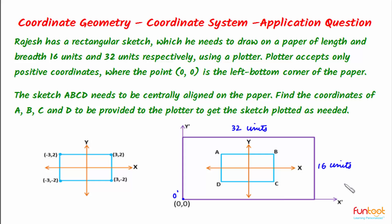Let's discuss the approach for doing this. We can see that the plotter is using the X dash Y dash coordinate system, whereas the coordinate system for the sketch is XY. We can call the origin for this sketch as O with coordinates (0,0). This point here will represent O.